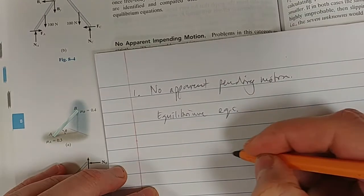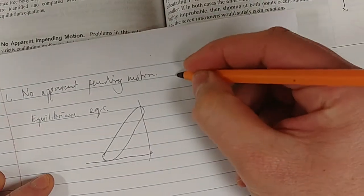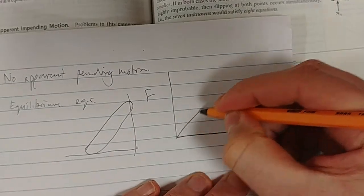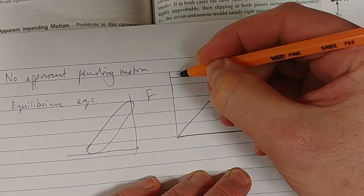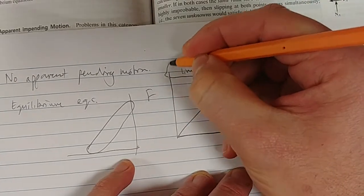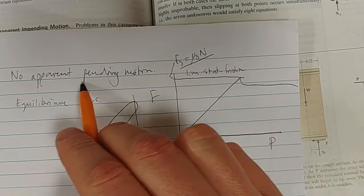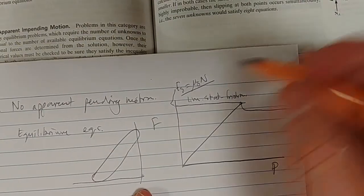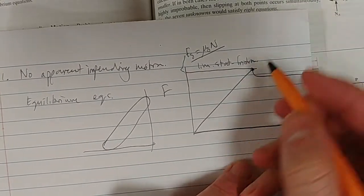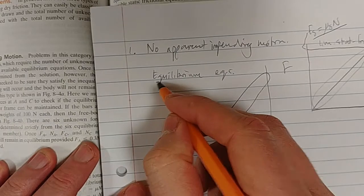That means if we've got some structure and there's no apparent impending motion, when we look at our frictional force and applied force graph — remember this thing that increases and then breaks off — that break-off point is our limiting static frictional equation, given by fs = μs·N. If we are not at impending motion, we are to the left of that point, which means all we are able to use are our equilibrium equations.